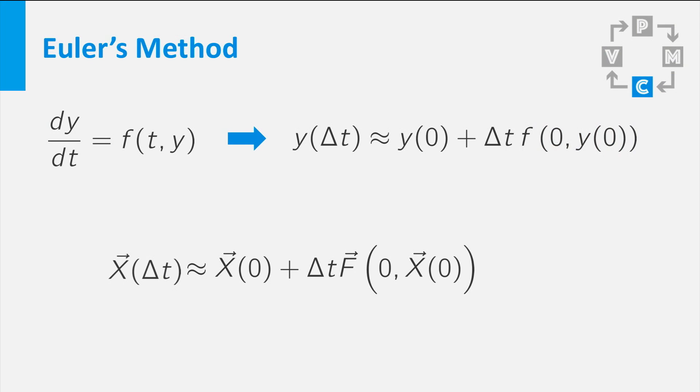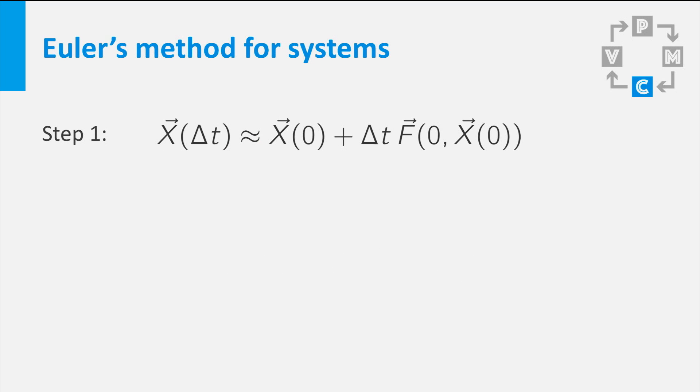But wait! This equation looks a lot like the first step of Euler's method for the function y. Isn't that convenient? This equation is the first step of Euler's method for systems of differential equations. If you would do another step to calculate x at 2 times Δt, you get an equation like this.